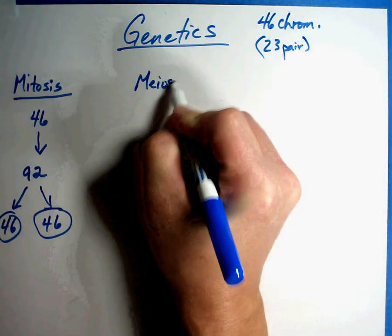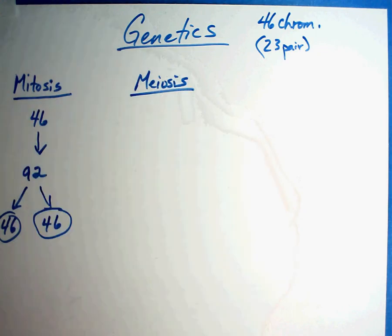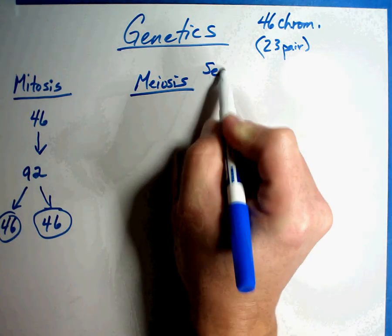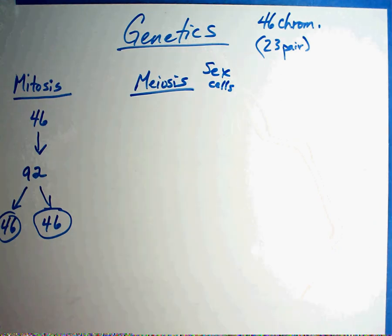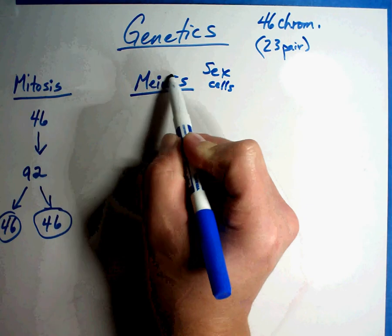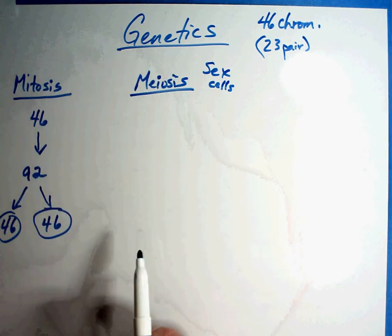Well, the process of making sex cells, sperm and egg cells, is by the process of meiosis. Now mitosis and meiosis get confused a lot, so let me explain.